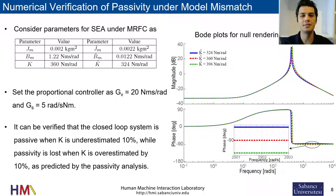Numerical simulations verify that when K is overestimated 10%, passivity is violated as predicted by the necessary conditions.